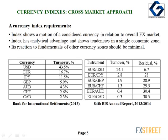A basic currency is considered against its major counterparts — for example, euro against franc, yuan, USD, and British pound simultaneously. A currency index has an obvious analytical advantage: it clearly shows tendencies in a single economic zone, such as the Eurozone for the euro index. The principal role of a currency index is its objectivity. Its reaction to fundamentals of other currency zones should be minimal.